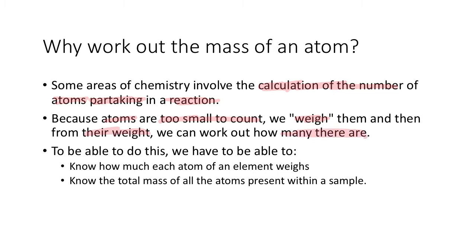It's like saying, if I have 150 grams of apples, and I know that each apple is 10 grams, then I know that there are 15 apples there. To be able to do this, we need to know how much each atom weighs, and then we need to know the total mass. In that previous example, each apple weighed 10 grams and the total mass is 150 grams, so therefore we know there are 15 apples.